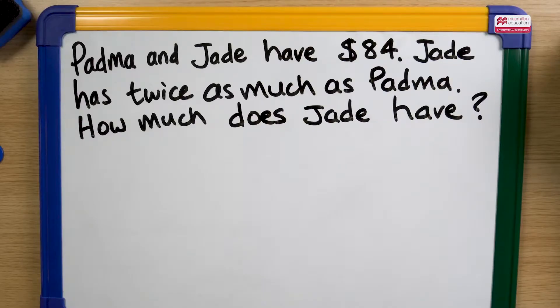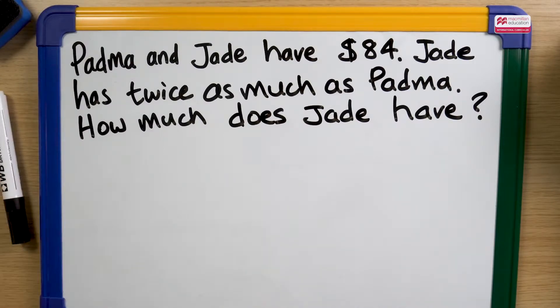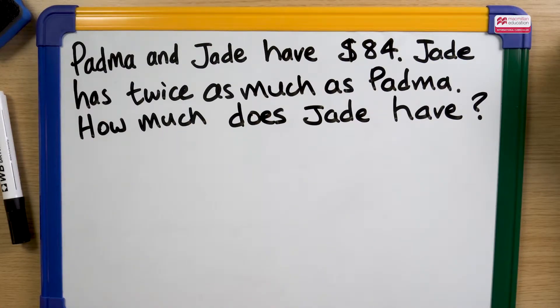In this example I'm going to use something that's quite often used in the Singapore Maths approach, which is a bar model approach. I'm going to have one coloured bar for Padma and another colour for Jade.